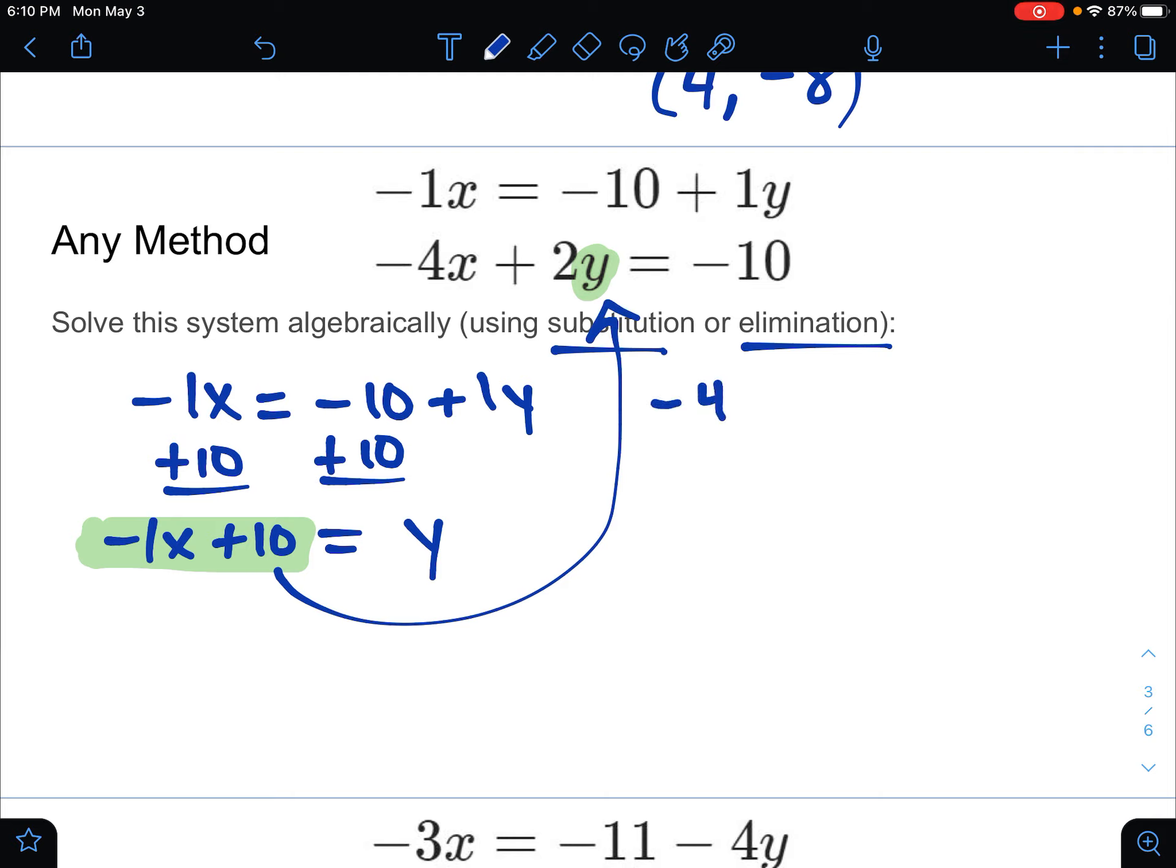That's going to go in for substitution here. So negative 4x plus 2 times the y thing equals negative 10. And we'll just solve for x. So multiply the 2 in. Negative 2x plus 20 equaling negative 10. Combining our x's, gives us negative 6x plus 20 equals negative 10.